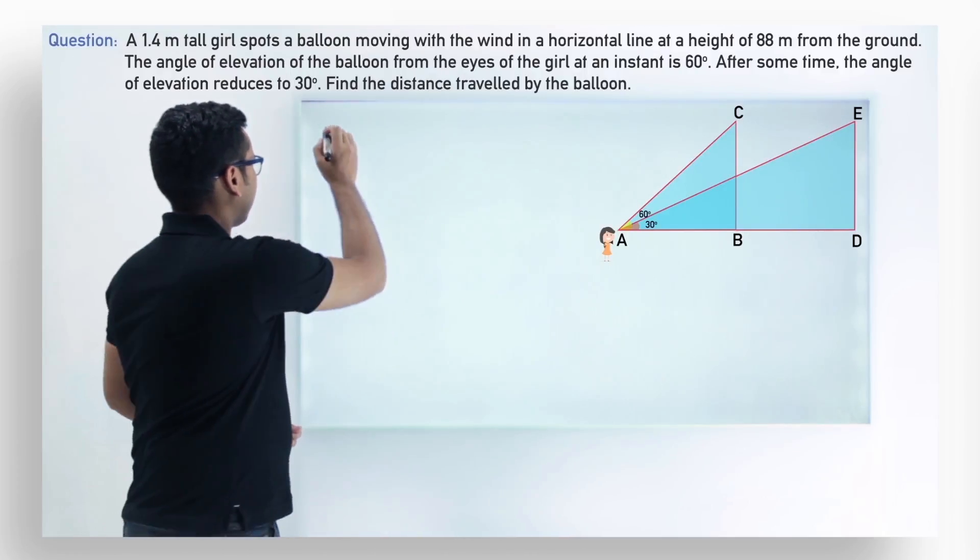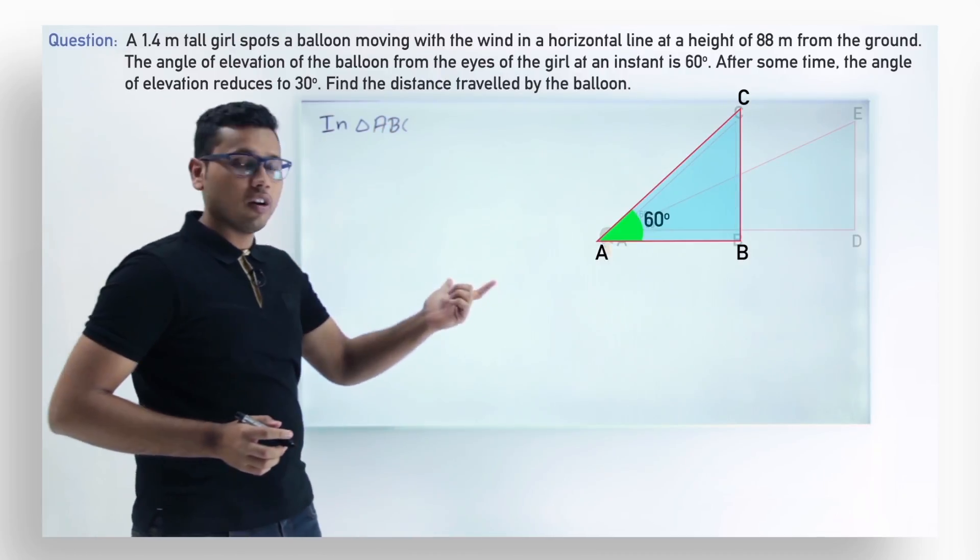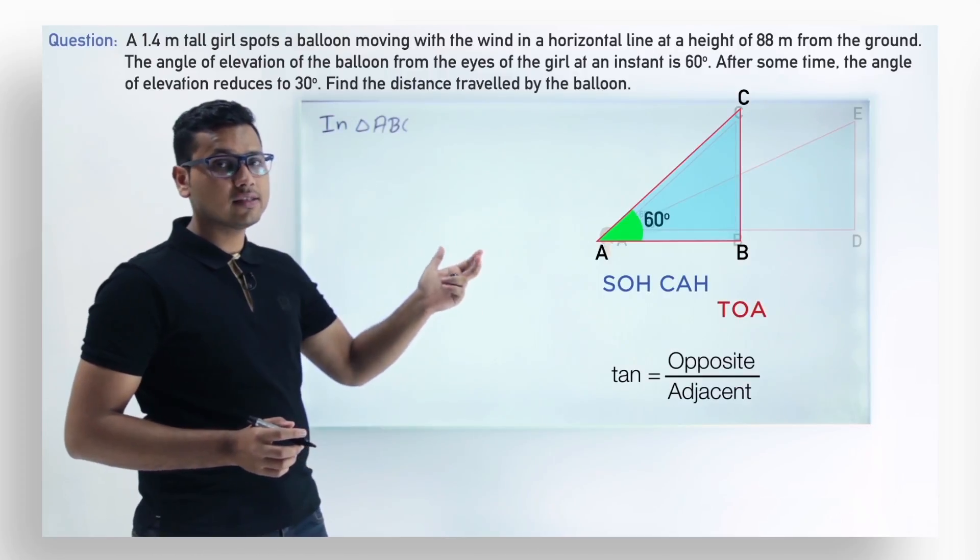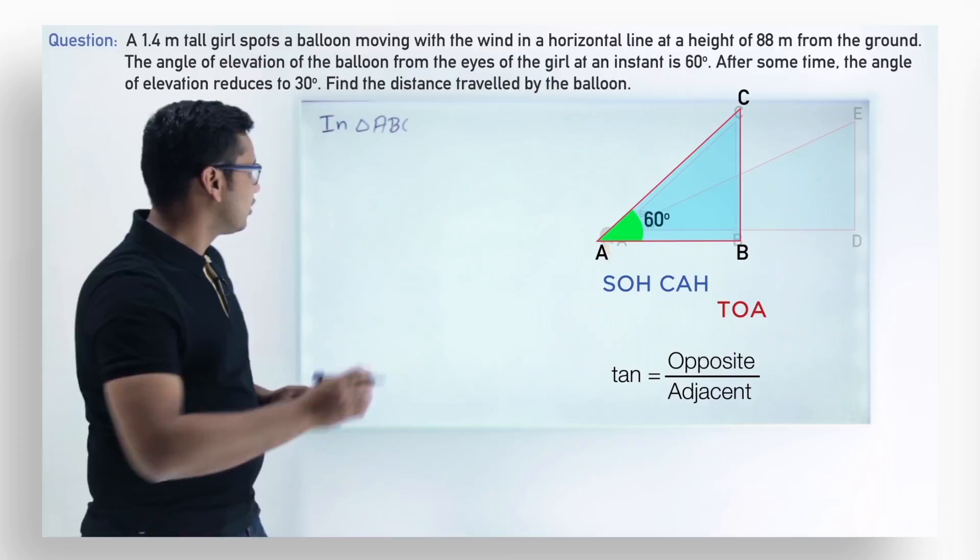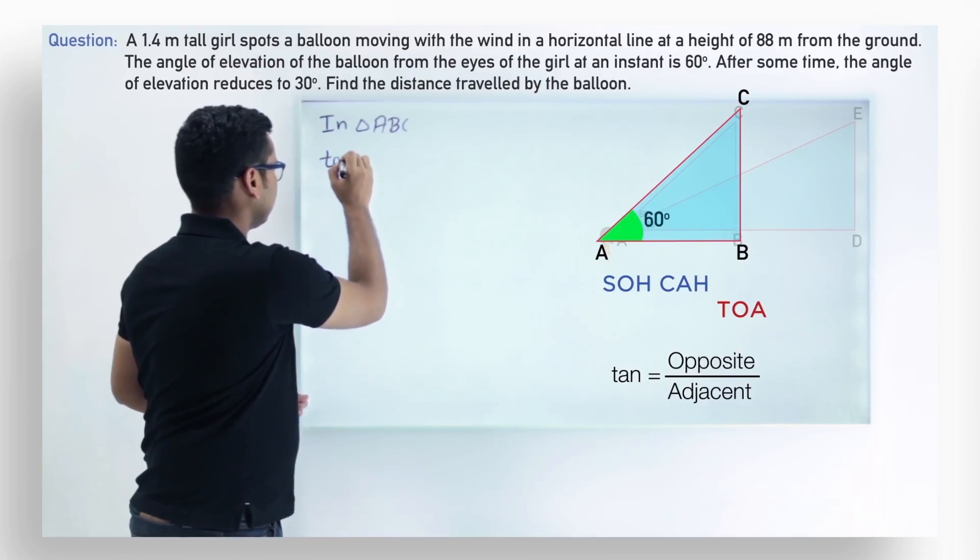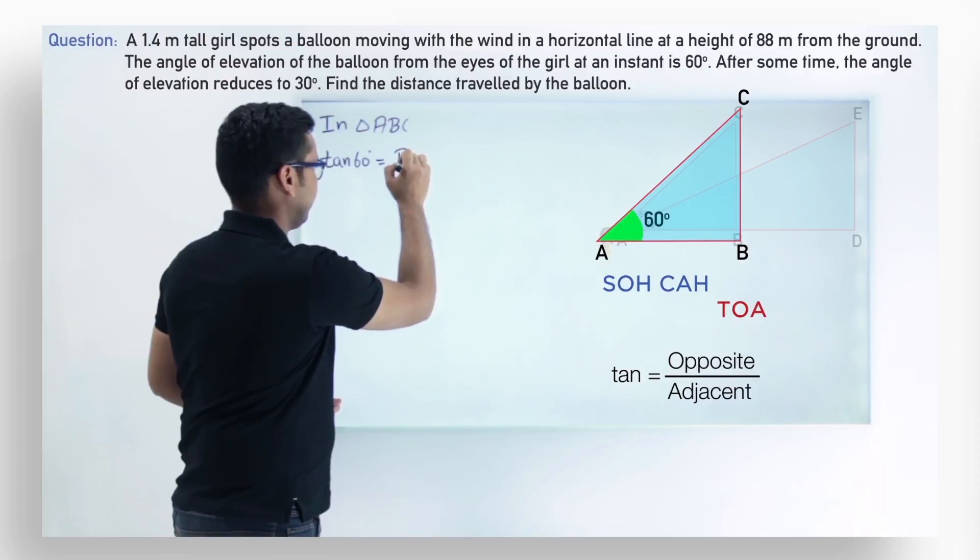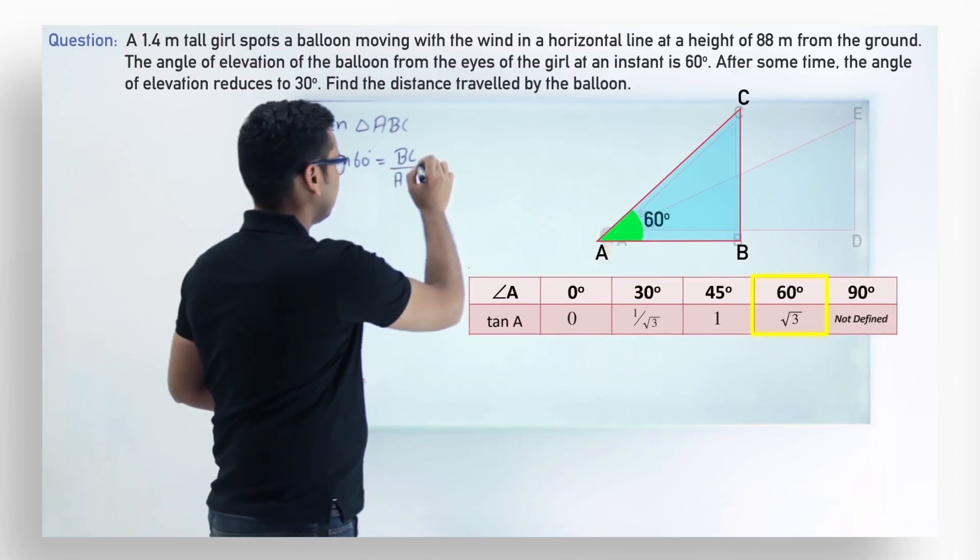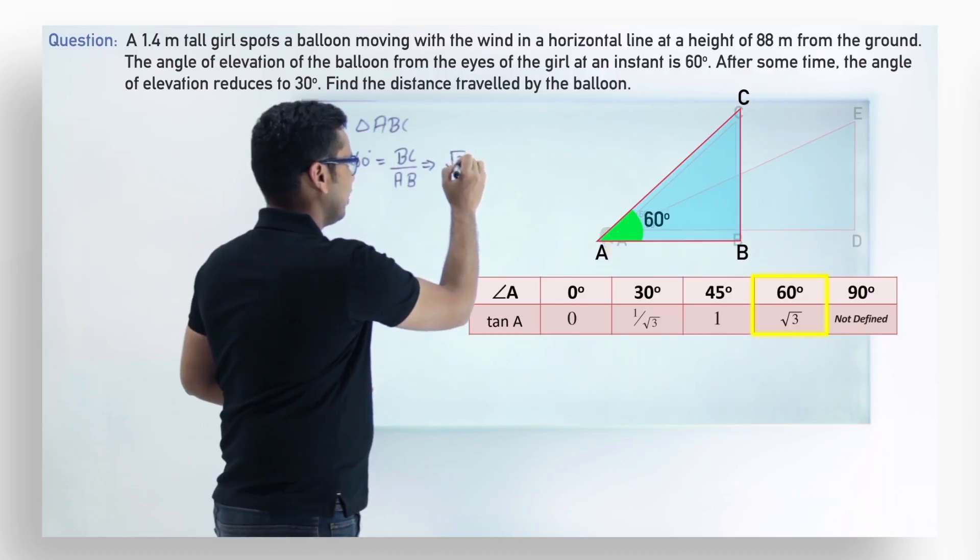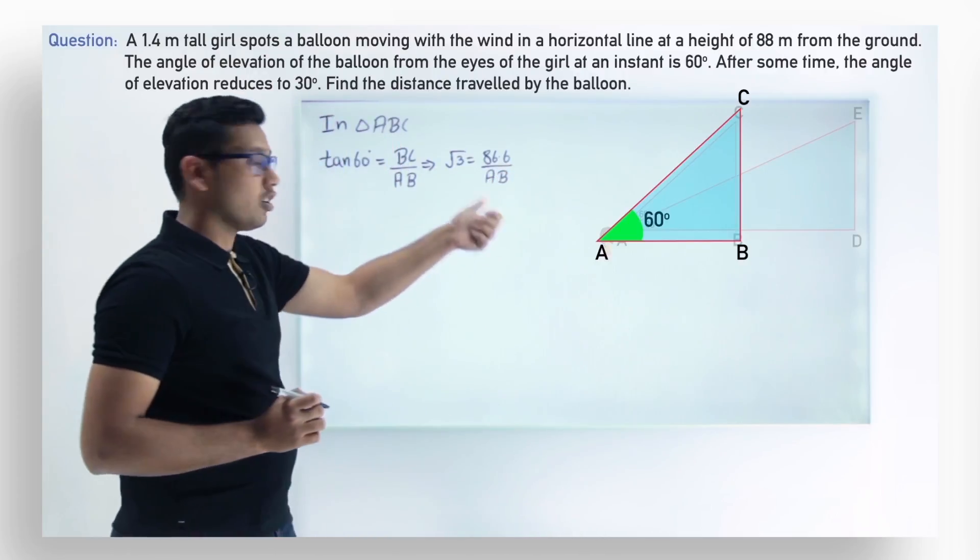Now in the first triangle ABC, we can apply the trigonometric ratios and get the value of AB. We can apply TOA here since we have the opposite and we have to find adjacent. So tan is opposite upon adjacent. We can apply tan of 60 degrees is equal to opposite BC and adjacent AB. Tan 60 is root 3 equals BC length 86.6 meters and AB we have to calculate. So just cross multiply and get the value of AB.